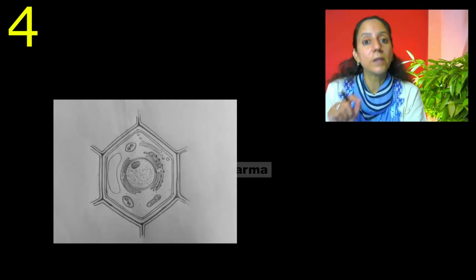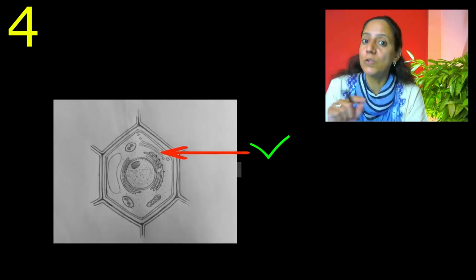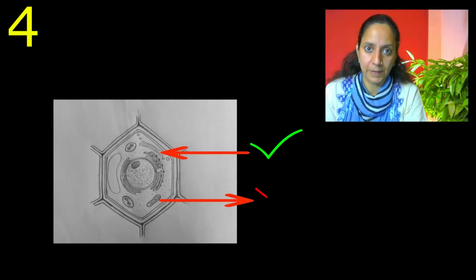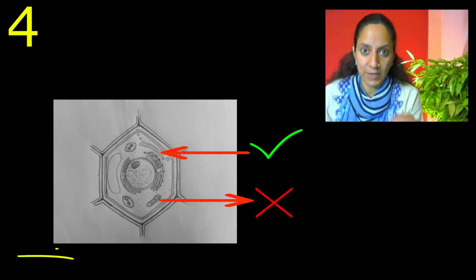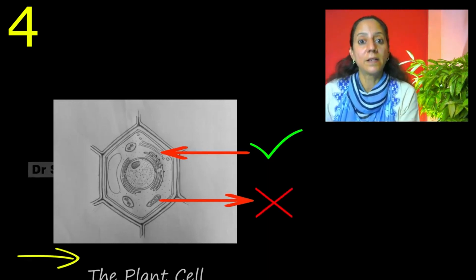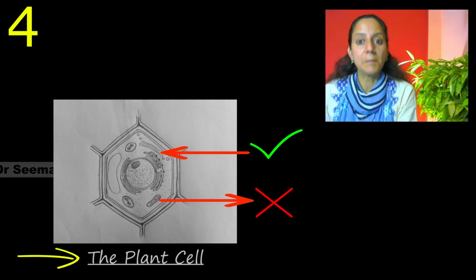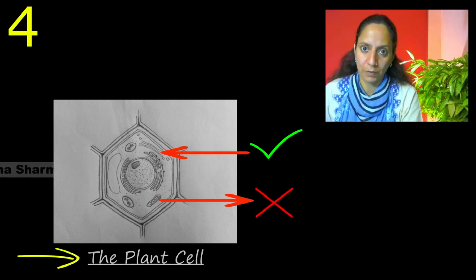Fourth point, while labeling any part of the diagram the arrow should always point towards the part which is to be labeled, and at the bottom of the diagram you have to write that this is the diagram of animal cell, plant cell, or whatever you have drawn.